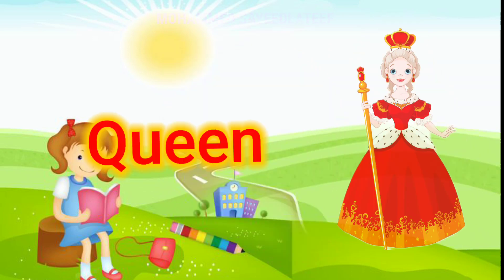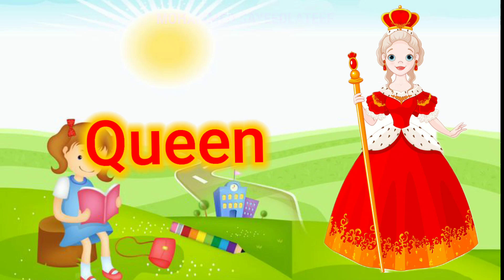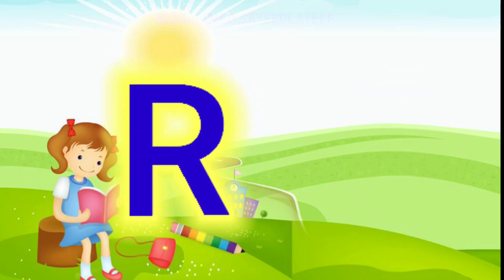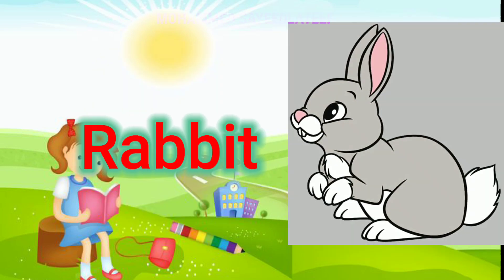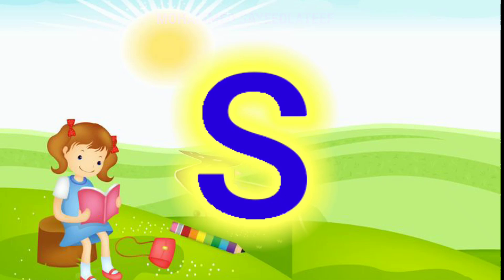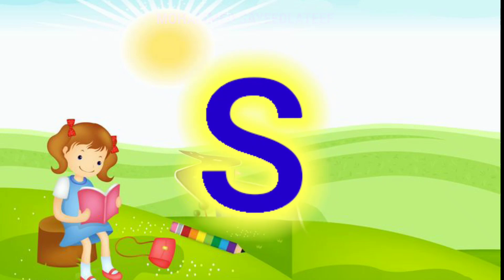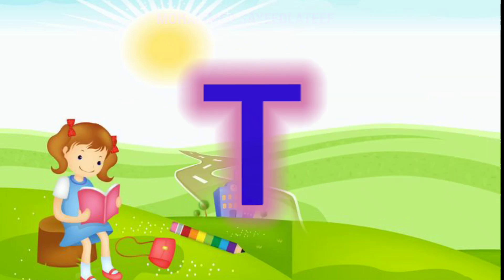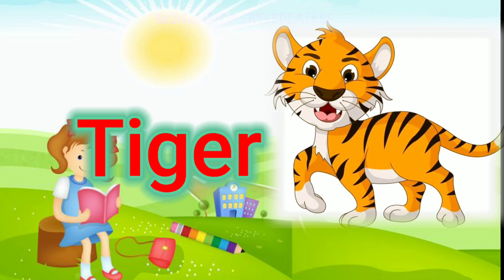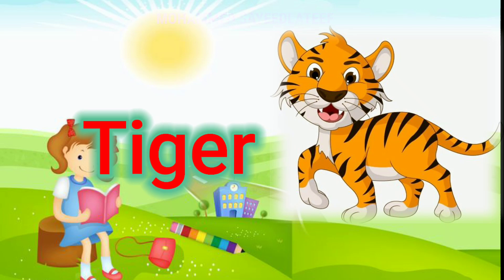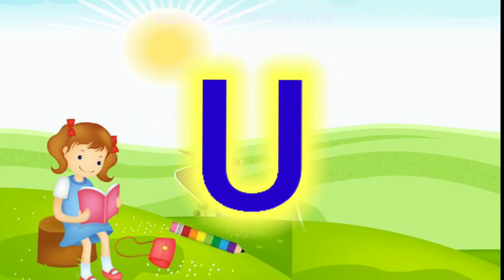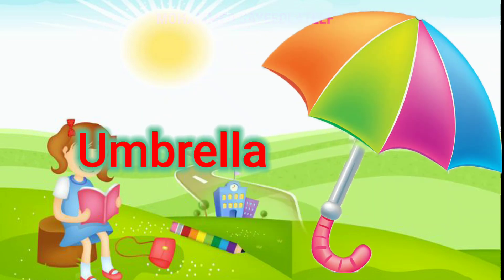Q for queen, R for rabbit, S for sheep, T for tiger, U for umbrella.